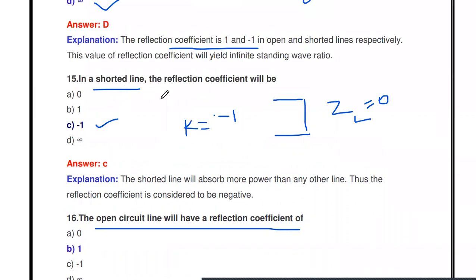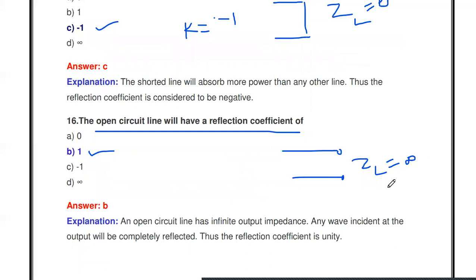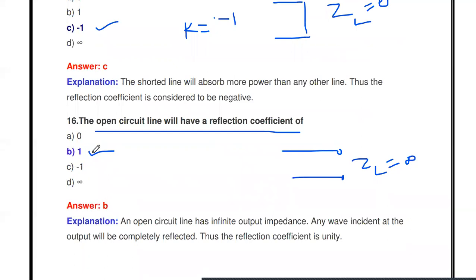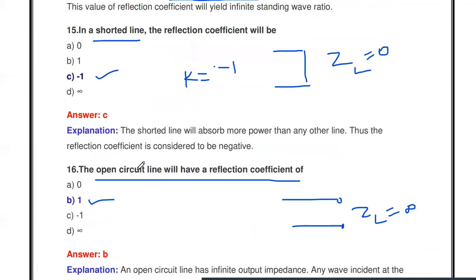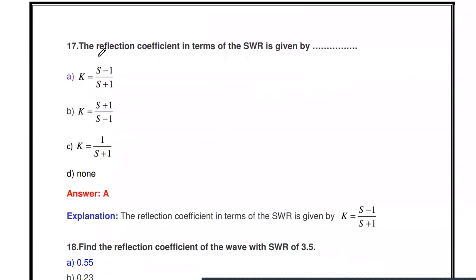An open-circuited line will have a reflection coefficient of — what? For an open-circuited line, the load impedance ZL = infinity. Substituting ZL = infinity into the formula k = (ZL − Z0) / (ZL + Z0), we get k = +1. So under open or short circuit conditions, the reflection coefficient is +1 or −1, and SWR becomes infinity.